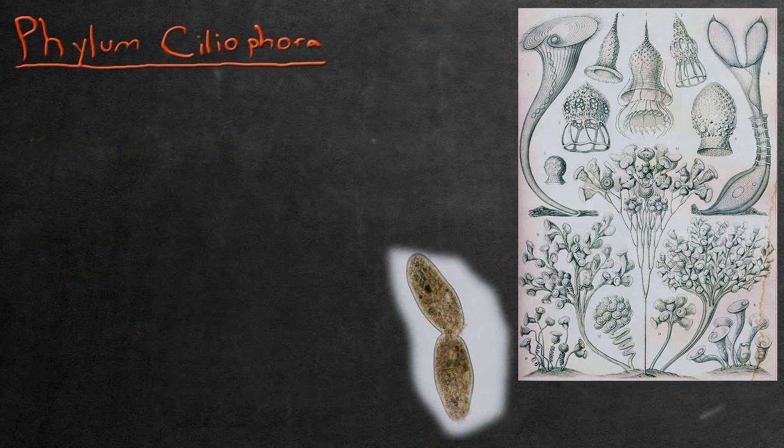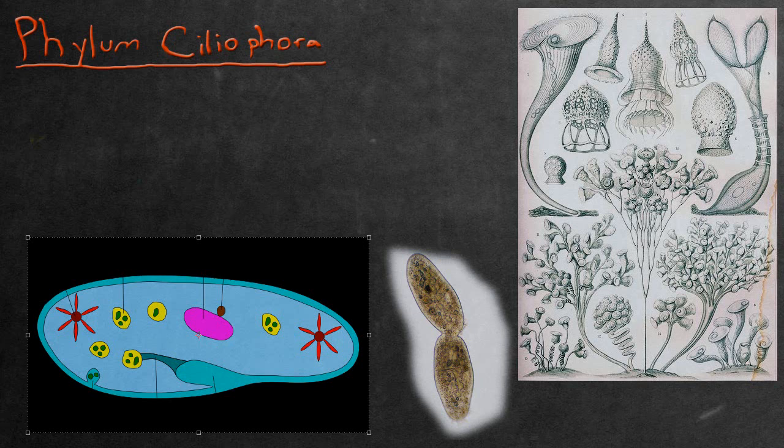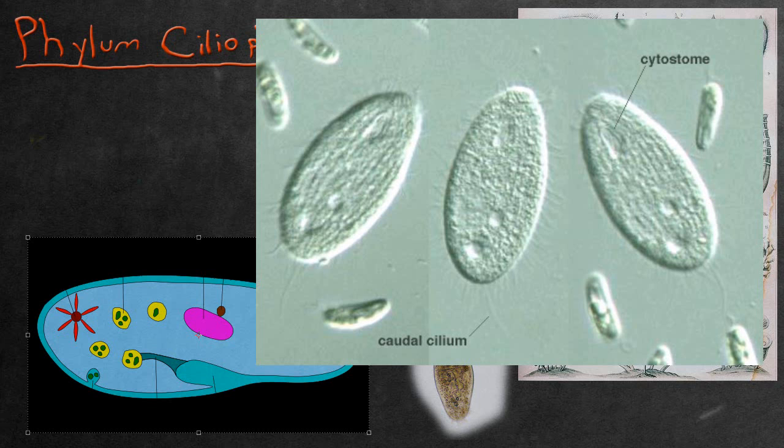So now that we got that out of the way, let's start talking about the actual phylum, Ciliophora. Species within this phylum are normally called ciliates. Most organisms have a cell that is modified to produce what's called a cytostome, or a mouth.